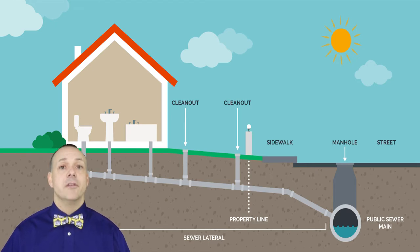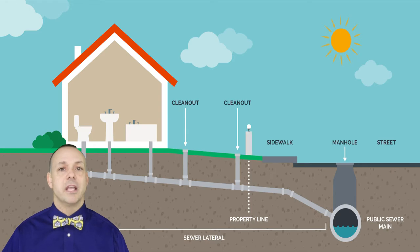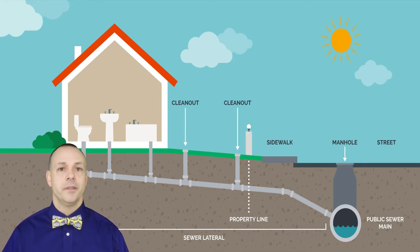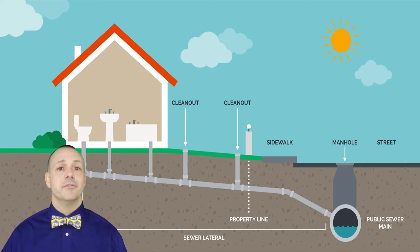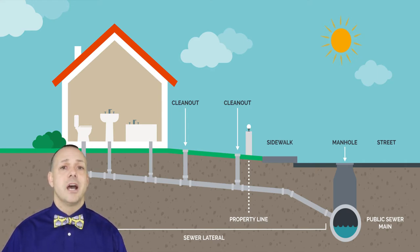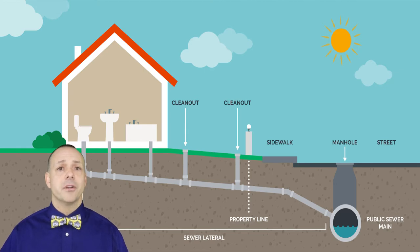In return, the homeowner will receive a quarterly sewer and water bill. There's nothing a homeowner needs to do with the wastewater except just flush the toilets, allow the waste to go down the drains and out to the plant.